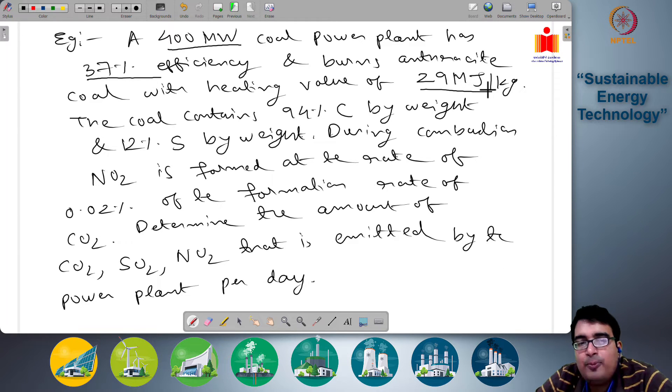And it also says that NO2 is being formed at the rate of production of 0.02% of how much CO2 is being produced. So from that you can get the amount of NO2. So that's what we will do next.